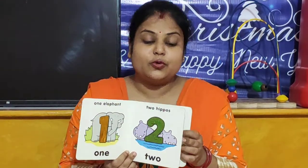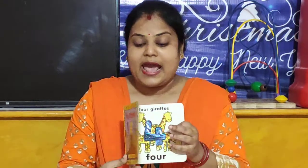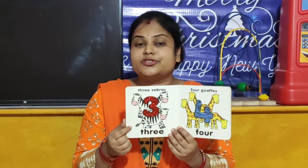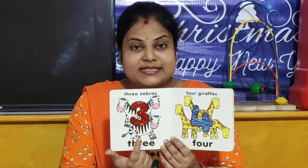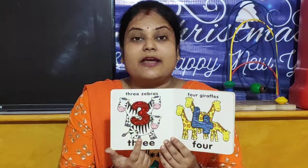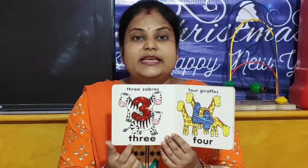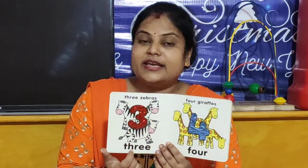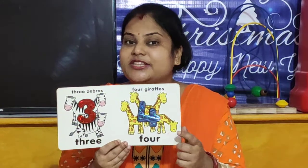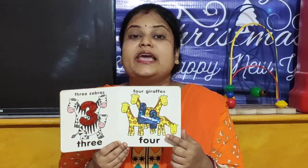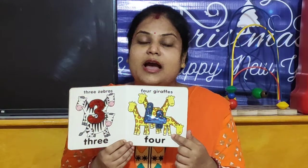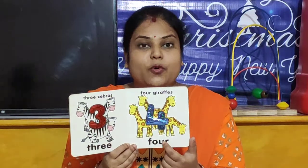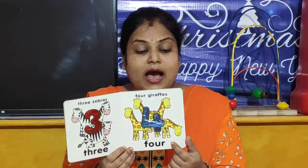After 2, we will look our next number. Our next number is this one. Which number is this? This is number 3. And what is the spelling of 3? T-H-R-E-E. And children, tell me after 3, which number comes? After 3, number 4 comes. So children, what is the spelling of number 4? F-O-U-R.